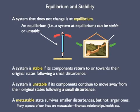The balanced pencil is an unstable one. A system is stable if its components return to or towards their original state following a small disturbance — jiggle the picture a little bit, and it will oscillate before returning to its original position. A system is unstable if its components continue to move away from their original state following a small disturbance. Also of interest is the term metastable: a metastable state survives smaller disturbances but not larger ones. We all experience metastability in our lives in aspects like finances, relationships, and health.